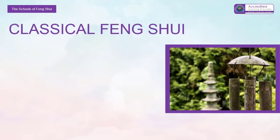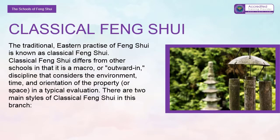Classical feng shui: the traditional Eastern practice of feng shui is known as classical feng shui. Classical feng shui differs from other schools in that it is a macro or outward discipline that considers the environment, time, and orientation of the property or space in a typical evaluation. There are two main styles of classical feng shui in this branch.